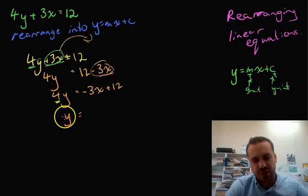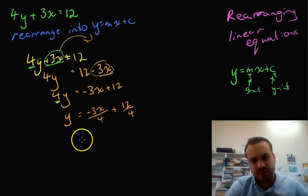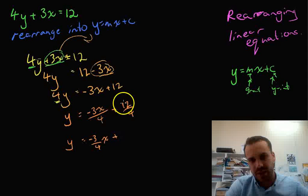So, 4y divided by 4 is just going to be y, and then we'll have negative 3x divided by 4, plus 12 divided by 4. Okay, when the whole thing's finished, we're going to have negative 3 over 4 times x. Okay, so negative 3x over 4 is the same as negative 3 over 4x. And then we're going to have 12 over 4, which is just 3.